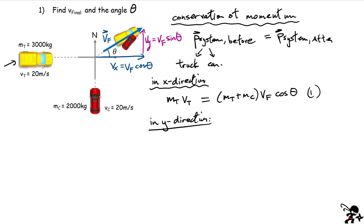Now let's look at conservation of momentum in the north (y) direction. I have a car moving upward at speed vc = 20 m/s. The truck doesn't have any momentum in the north direction, so that's all I have before the collision. After the collision, I have the combined mass of truck plus car, with a northward velocity component of vf·sin(θ). This is equation two.